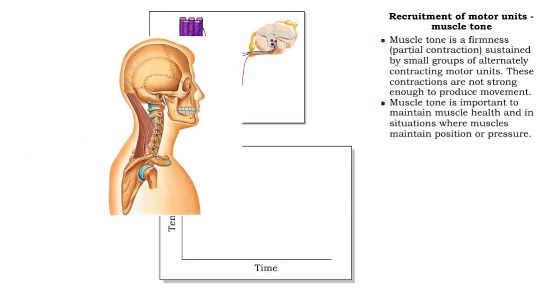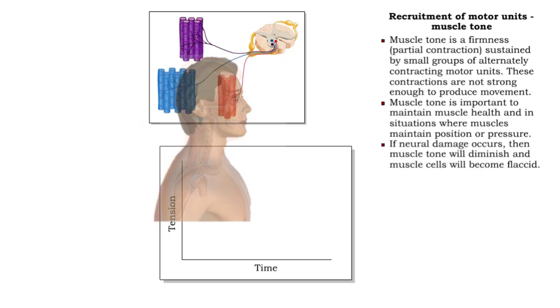If neural damage occurs, then muscle tone will diminish and muscle cells will become flaccid.